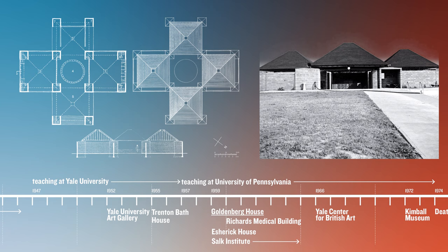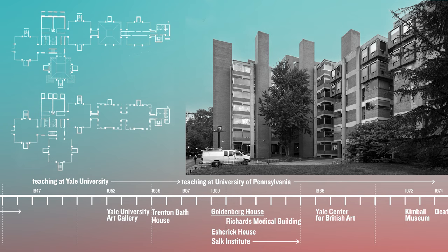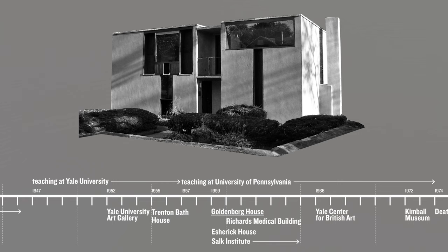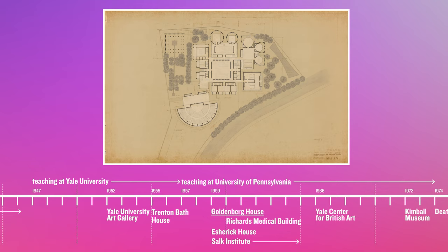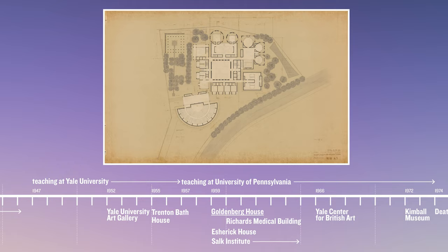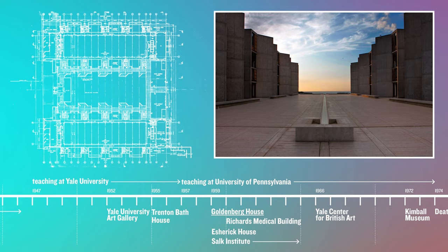The Goldenberg House comes just after the Trenton Bathhouse, a similarly arranged centralized plan with four sides and empty corners. It also falls right at the beginning of the design for the Richards Medical Research Laboratories, where Kahn's servant and served techniques would develop. The Goldenberg House was designed at the same time as the Esherick House, which uses similar T-shaped windows, and also at the same time as the Salk Institute commission, whose plan would begin in a configuration reminiscent of the Goldenberg's atrium before being straightened out into the famous axial view outward into the horizon.